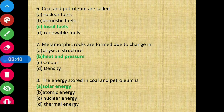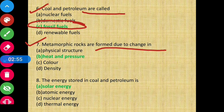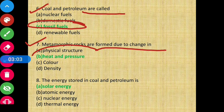Question 6: Coal and petroleum are called — coal and petroleum are called fossil fuels. Question 7: Metamorphic rocks are formed due to change in — metamorphic rocks form when there is a change in heat and pressure.